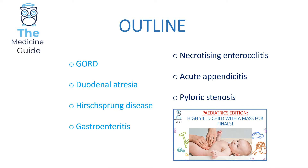The outline of today's video covers the key high yield causes of vomiting in paediatrics for medical school examinations. I'm going to focus on GORD, duodenal atresia, Hirschsprung disease, and gastroenteritis. Necrotizing enterocolitis, acute appendicitis, and pyloric stenosis are also high yield but have been covered in my previous high yield child with a mass video, so today I'll focus on the four mentioned.